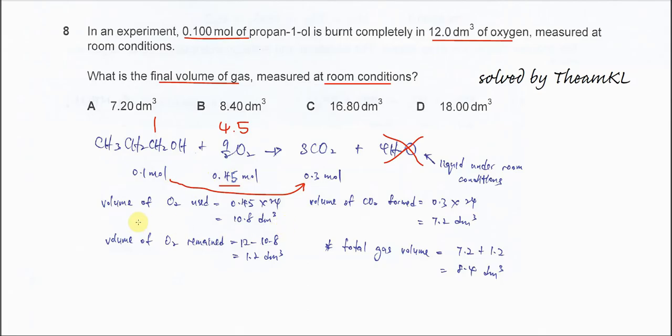Okay, so the volume of oxygen that really used in the combustion is 0.45 times the molar volume. We will get 10.8 dm³.